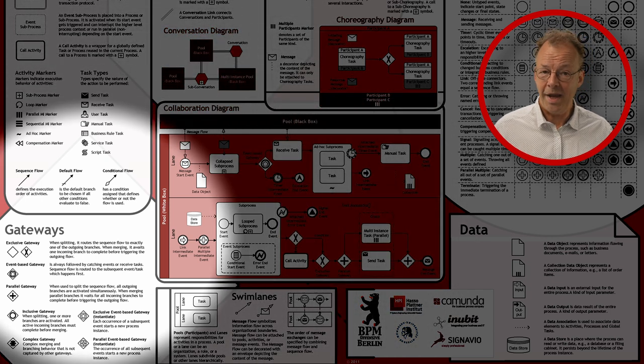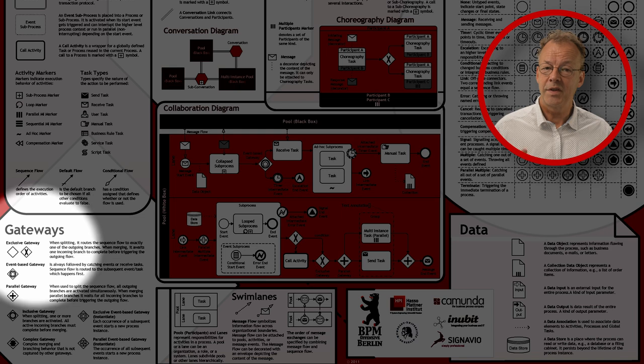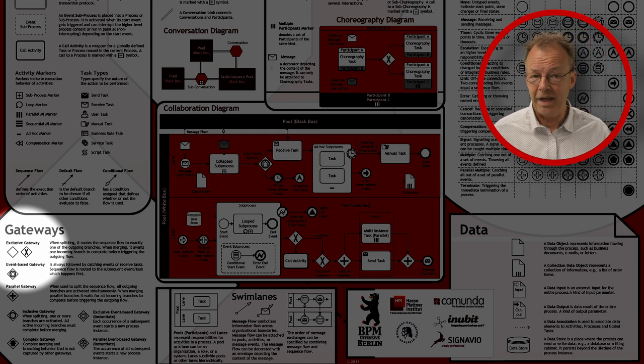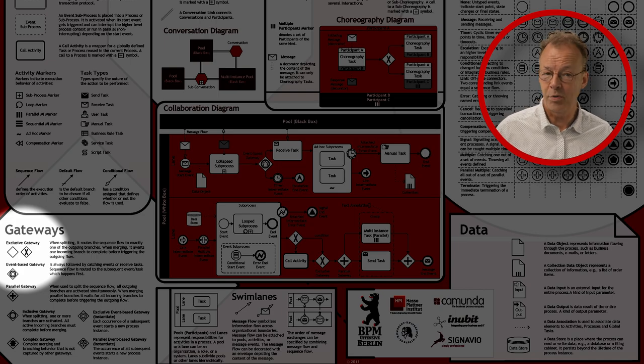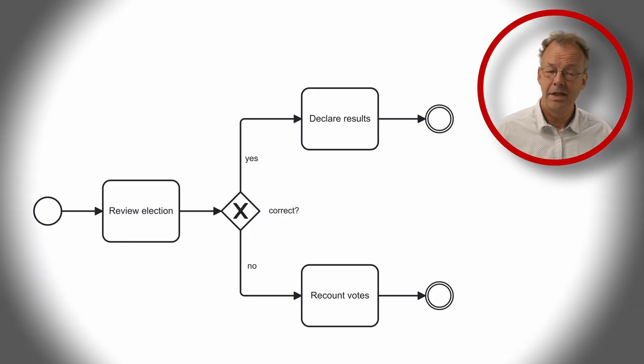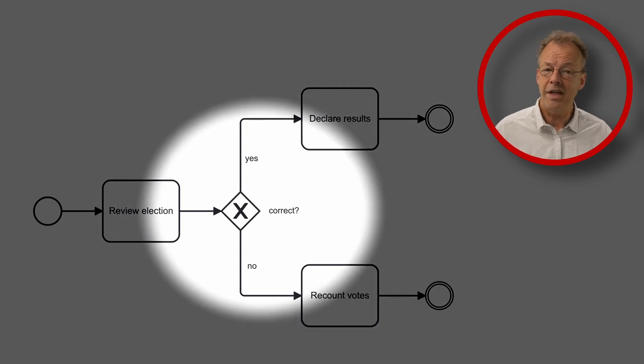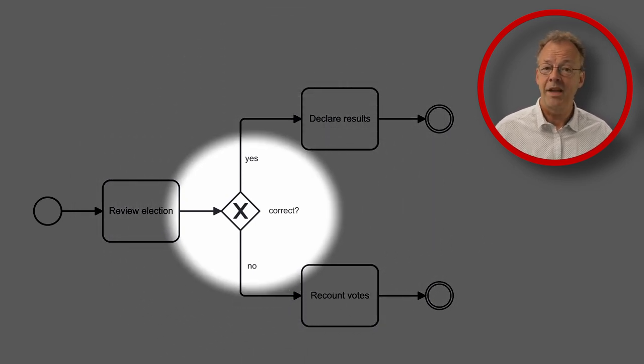In BPMN we model this with a splitting exclusive gateway. A splitting exclusive gateway is an exclusive gateway with an input arc and more than one output arcs. It is good modeling practice to annotate the exclusive gateway with a question and the outgoing arcs with the answers to this question.